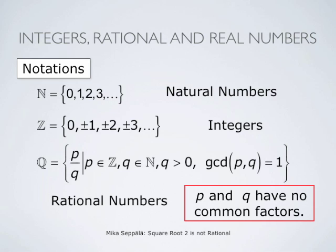To make this representation unique, we assume that P is a positive or negative integer and Q is a positive natural number, and that P and Q do not have common factors. That is expressed by writing GCD of P, Q equals 1. GCD stands for greatest common divisor. This condition then means that the representation of a rational number as P divided by Q is unique.